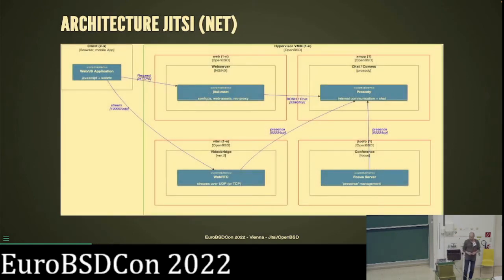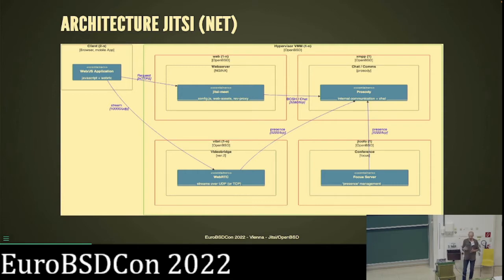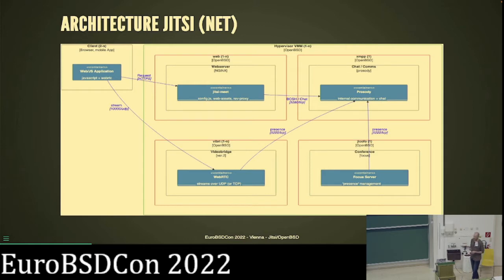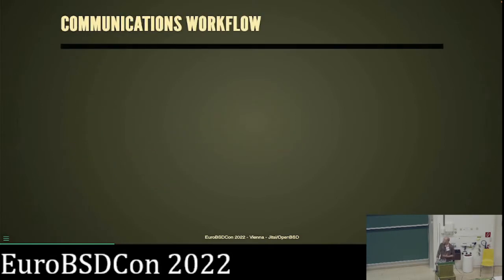The communication workflow: the client talks to the Nginx server, gets delivered the website where you can choose an existing conference or set up a new one, pick your nickname in pre-join, and then a request goes via Prosody. JCOFO assigns a free unallocated video bridge and then the whole thing is set up. That's the theory of the setup.